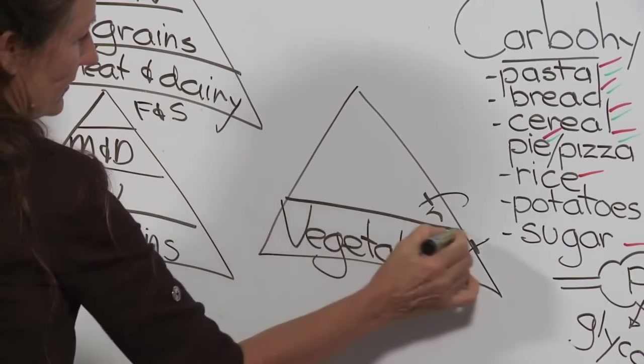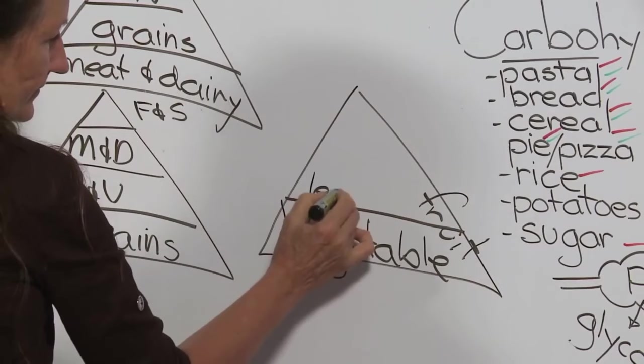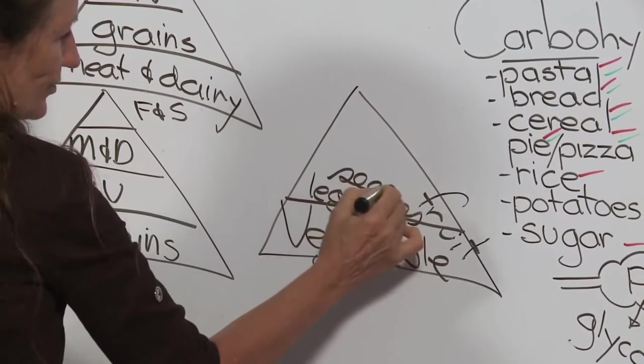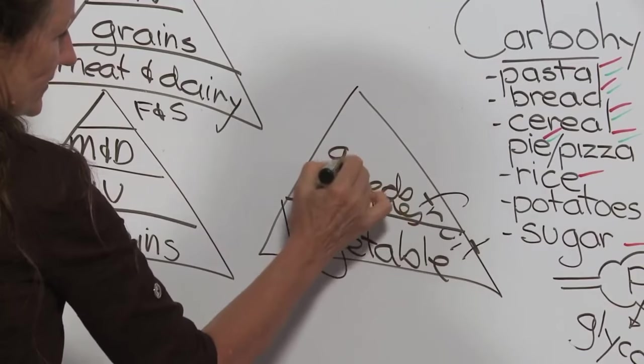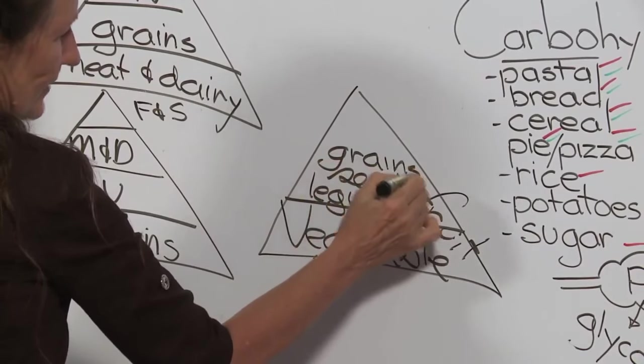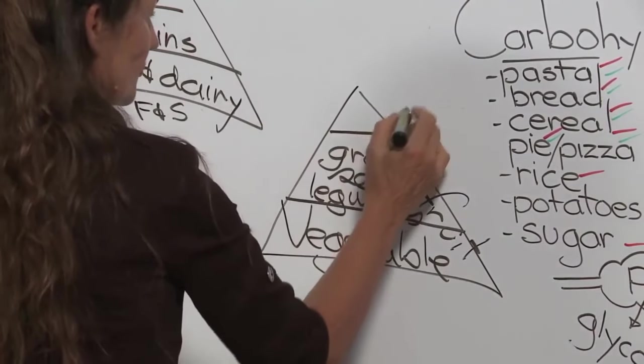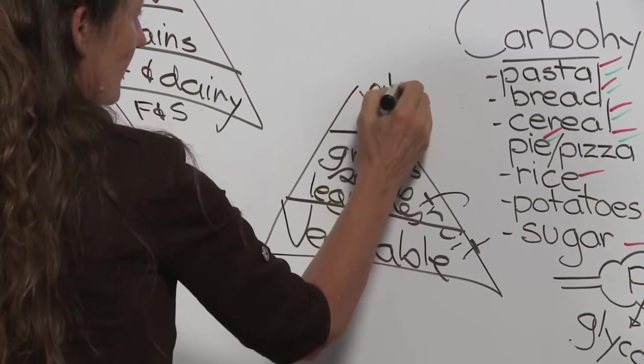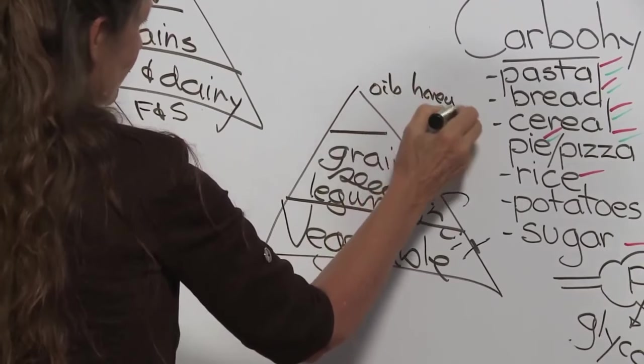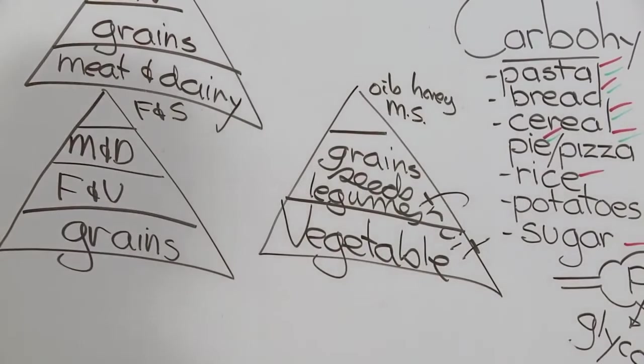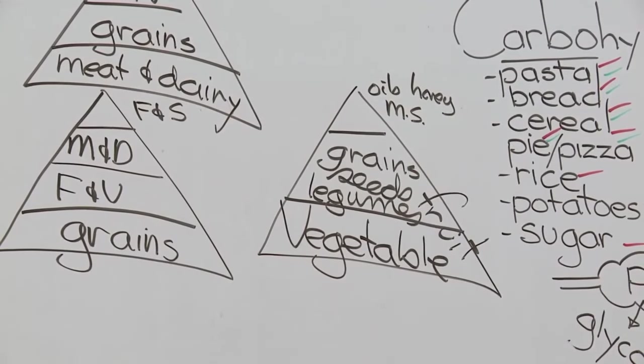And the next rung: legumes, nuts, seeds. They're good proteins. Grains. Remember the grains are the negotiating part of the meal. And then up the top we've got the fats and the sugars. So we'll say oils, honey, all very concentrated foods, maple syrup. My rung has three because I believe that the vegetarian food and the vegetarian protein is a far superior one.